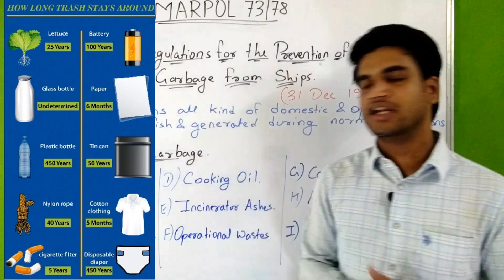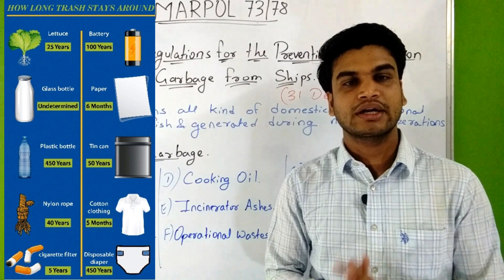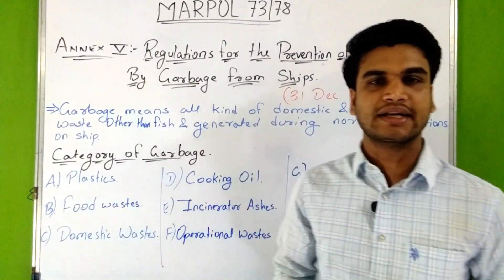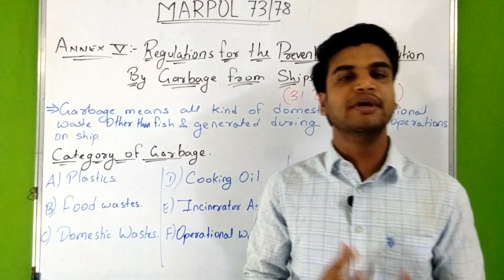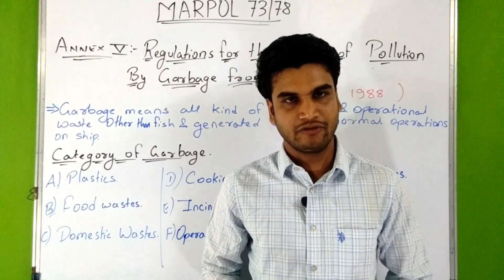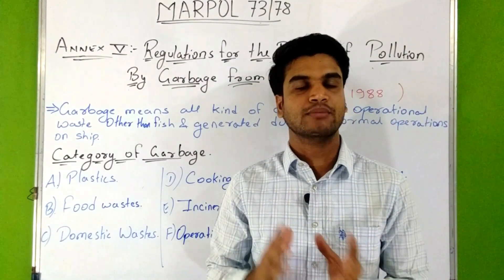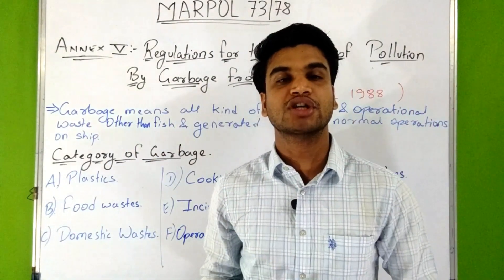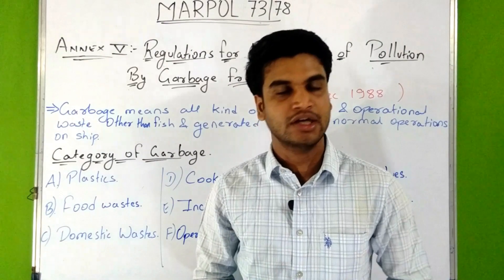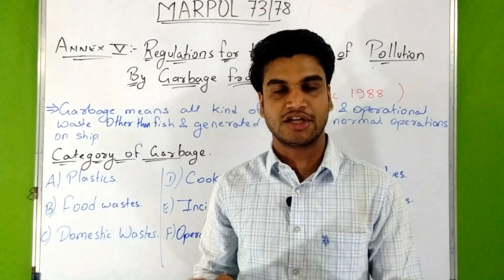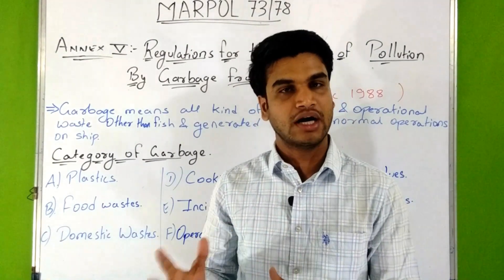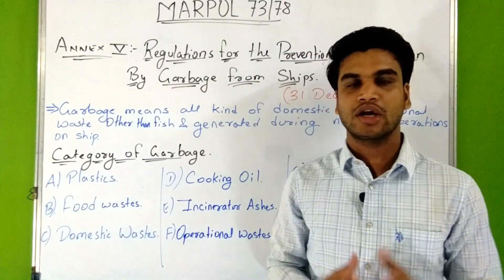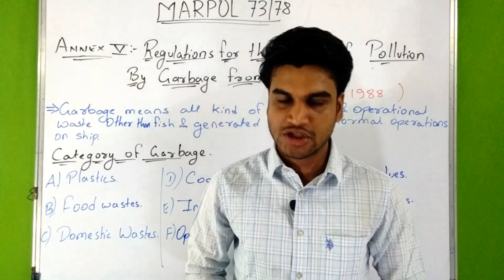On screen you can see how much time different types of waste take to dissolve into the sea, which shows why garbage is a major concern for our marine environment. The most important features of Annex 5 are the total prohibition of discharge of plastic waste into the sea and severe restrictions on the discharge of other garbage categories into the sea, coastal areas, or special areas.